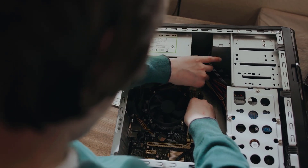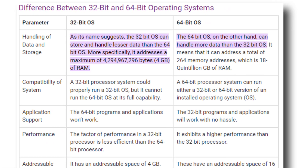Let's look at the comparison table. The first category is handling of data and storage. As the name suggests, the 32-bit OS can store and handle less data than the 64-bit OS. More specifically, it has a maximum of 4GB of RAM, whereas the 64-bit supports up to 18 quintillion GB of RAM — that's a big difference between the two.